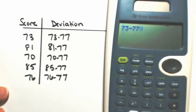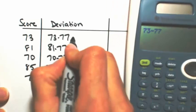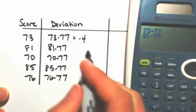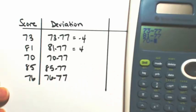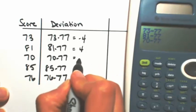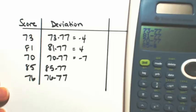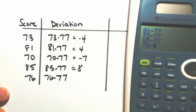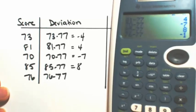So 73 minus 77 is going to be negative 4. 81 minus 77 is positive 4. 70 minus 77 is negative 7. 85 minus 77 is 8. And 76 minus 77 is negative 1.